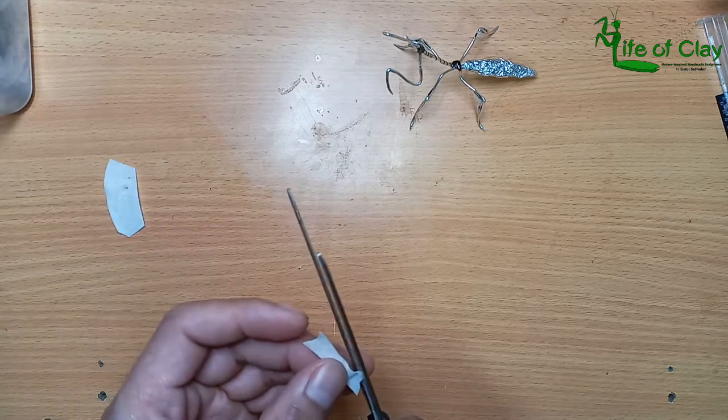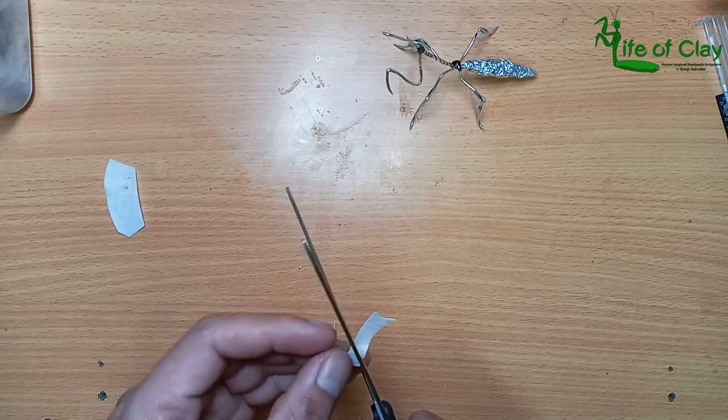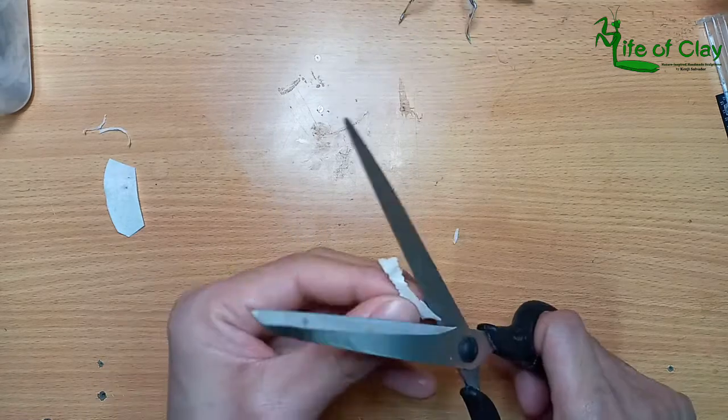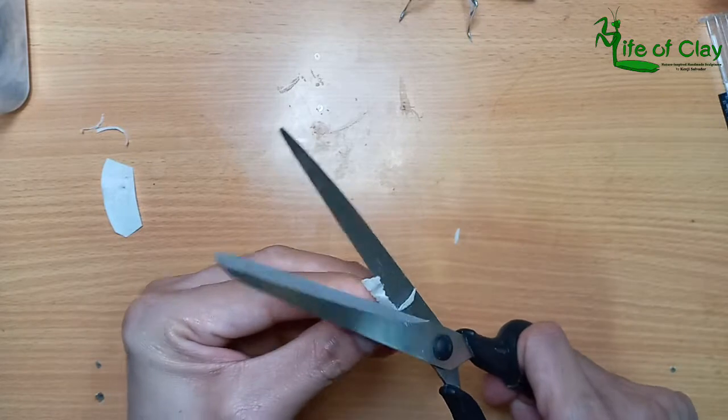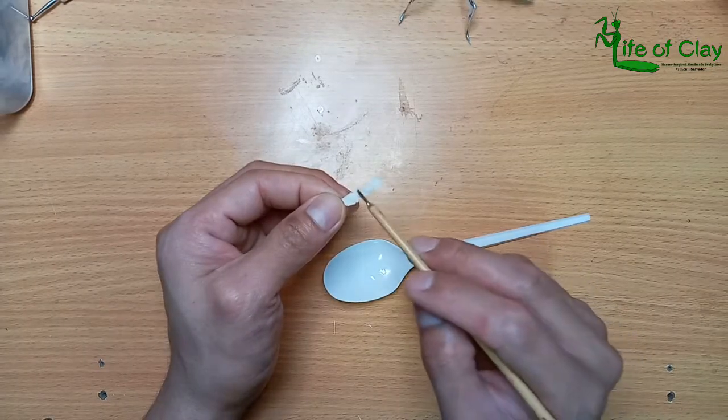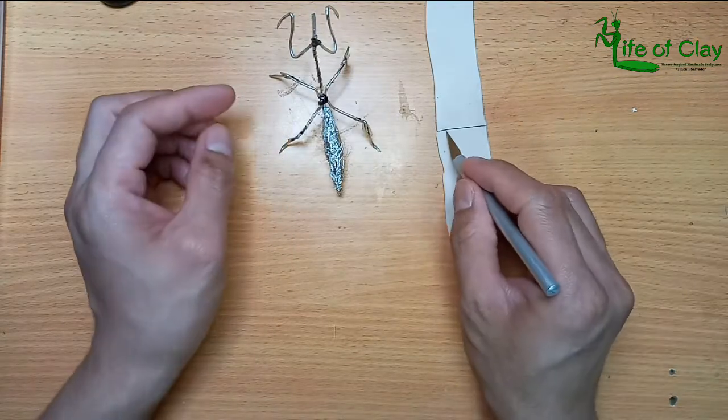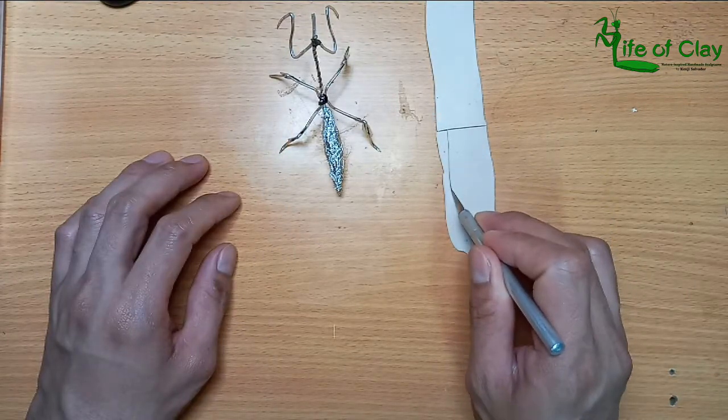And let's do that leaf-like headdress for her head and finish it also with epoxy resin. And now it's time to cover the abdomen with clay.